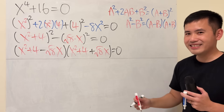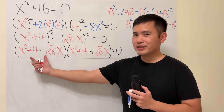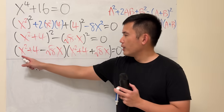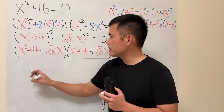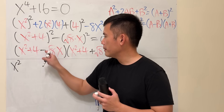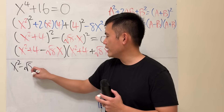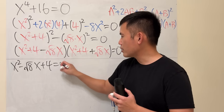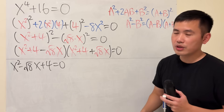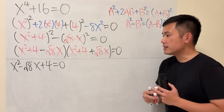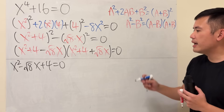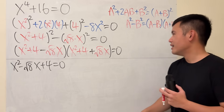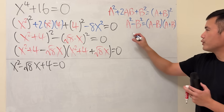Setting the first factor equal to 0, we get x-squared minus square root of 8 times x plus 4 equals 0, which is the standard quadratic form. To solve this, we can use the quadratic formula.